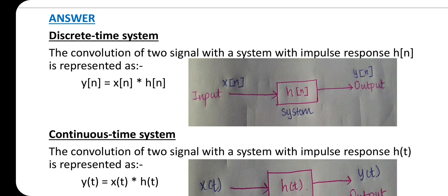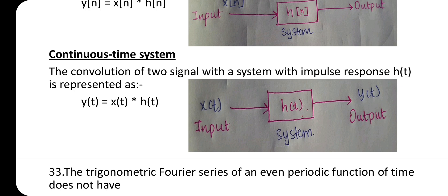For discrete time systems, the convolution of two signals with a system with impulse response h(n) is represented as y(n) = x(n) ∗ h(n). For continuous time systems, the convolution with impulse response h(t) is represented as y(t) = x(t) ∗ h(t).